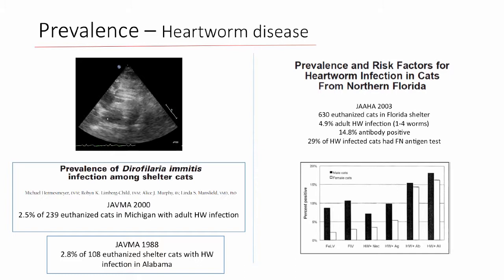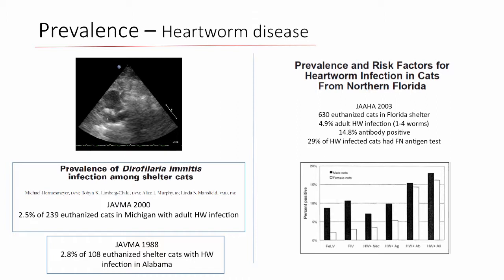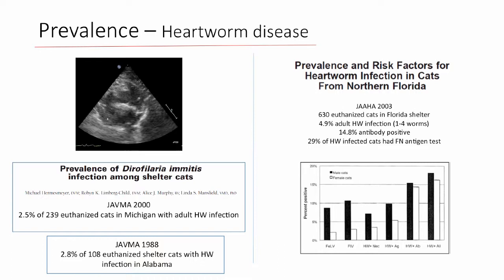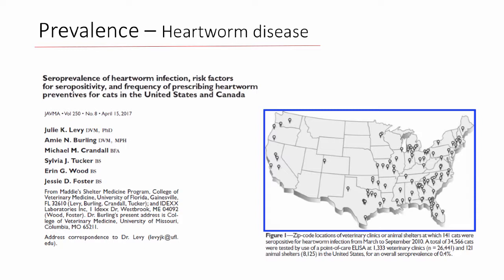A 2003 JAHA study of 630 cats euthanized in a shelter found close to five percent prevalence of heartworm infection based on finding one to four worms in the heart. They also did serology, finding a much higher percent of antibody-positive cats, speaking to exposure and non-patent infections. Conversely, nearly 30 percent of cats where worms were found had a negative antigen, underscoring the need for both antigen and antibody testing to accurately diagnose all heartworm-infected cats. Males were more likely to be infected than females.